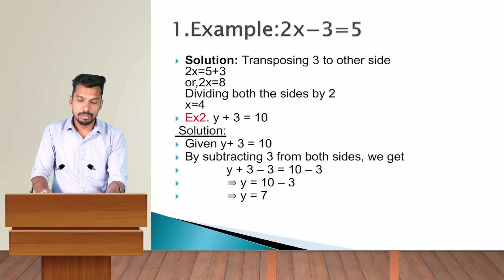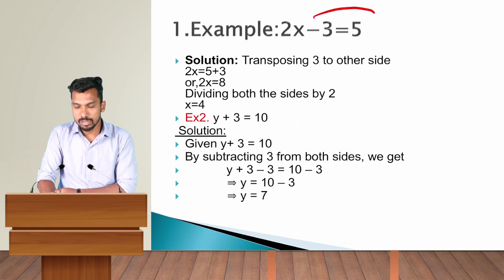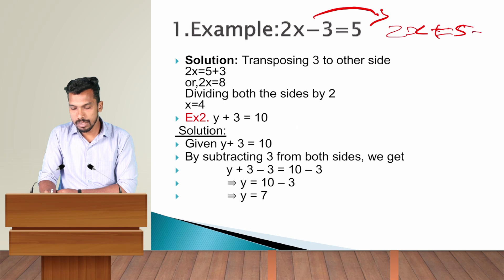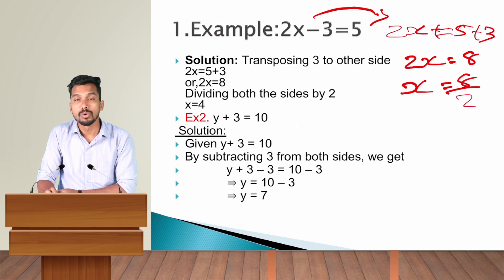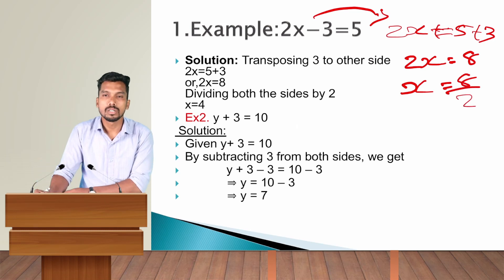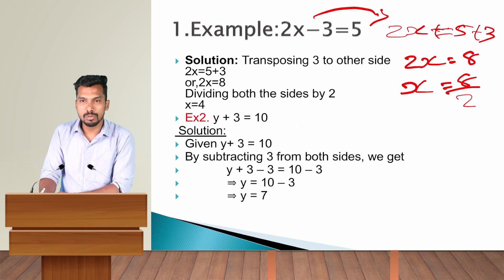In the same manner, we solve 3x minus 11 equals 22. Transferring minus 3 to the right hand side changes it to plus 3, so 2x equals 5 plus 3, giving 2x equals 8. Therefore x equals 8 divided by 2, because x and 2 are connected by a multiplication relationship.